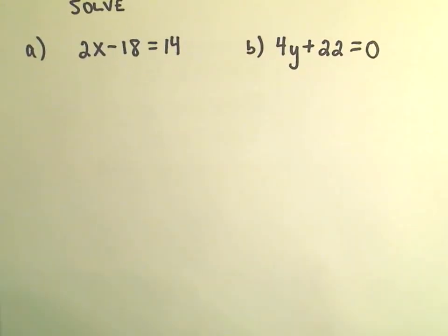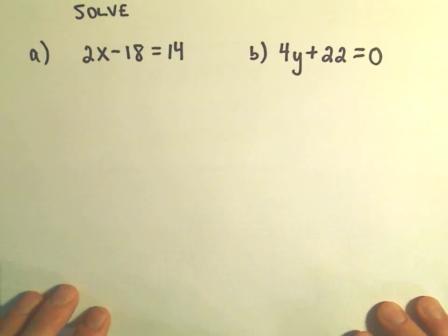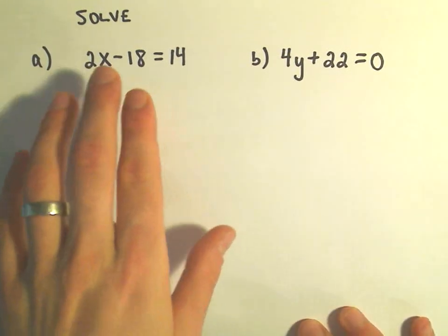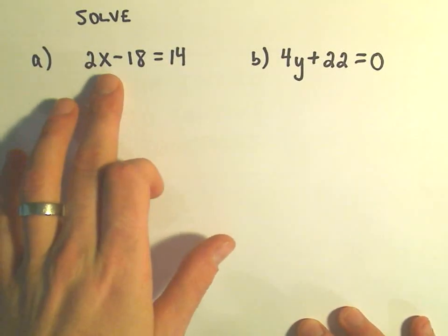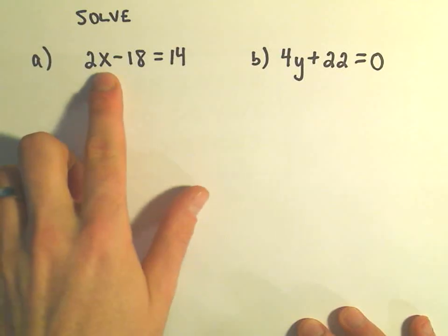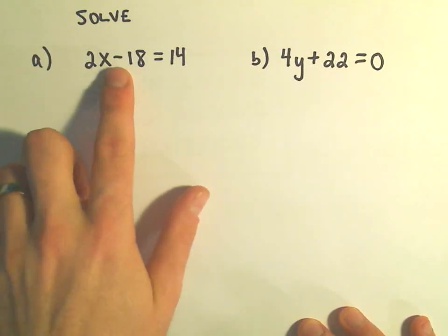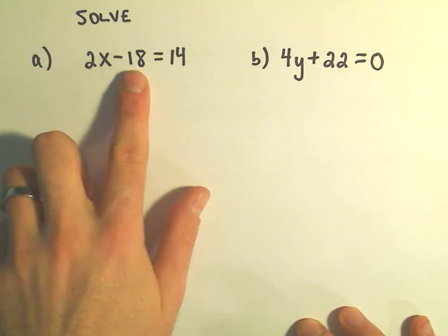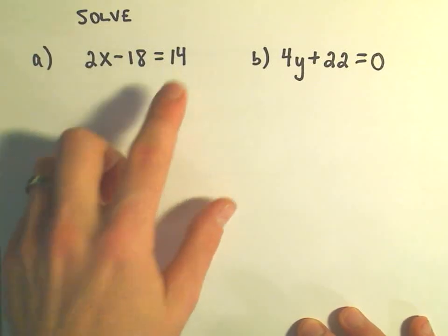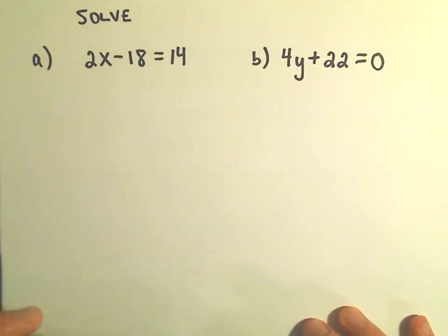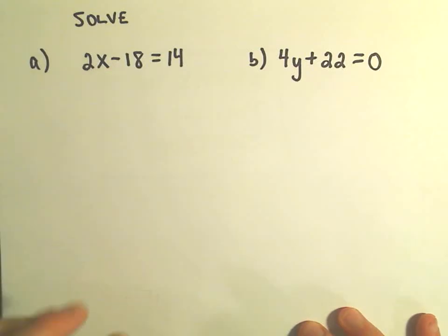In part A we have 2x minus 18 equals 14. And what we're trying to do is figure out some number for x that if we plug it into the left side, multiply it by 2, and then subtract 18 away from it, we want to get the number 14 at the end.